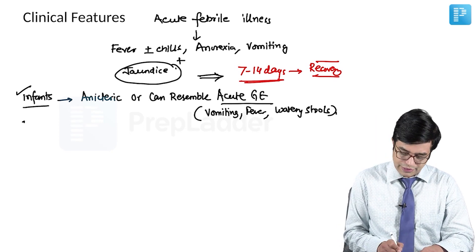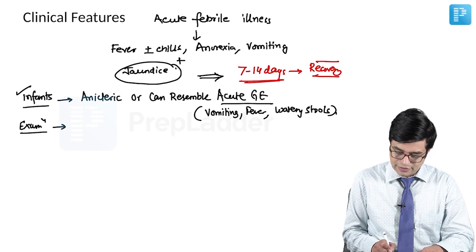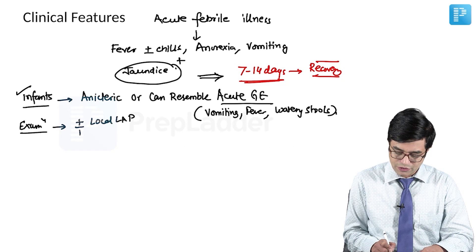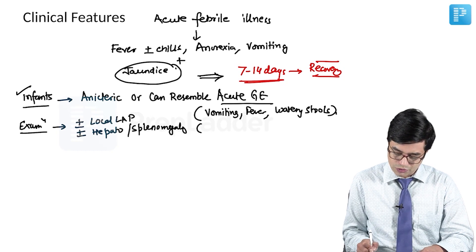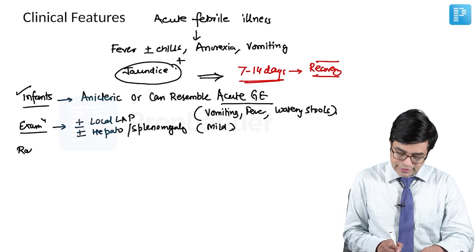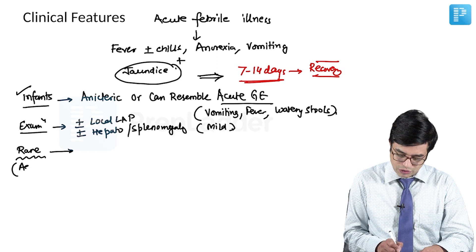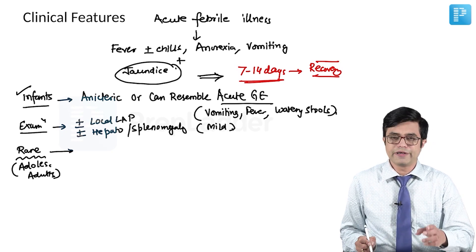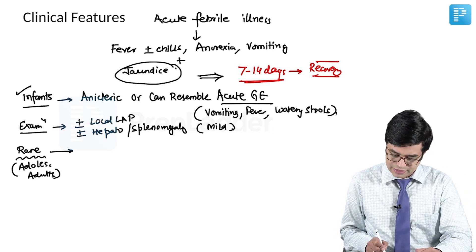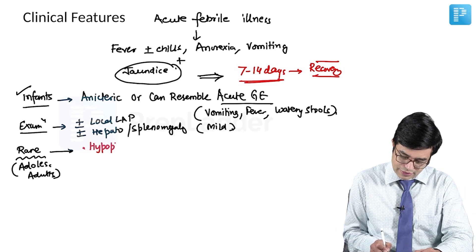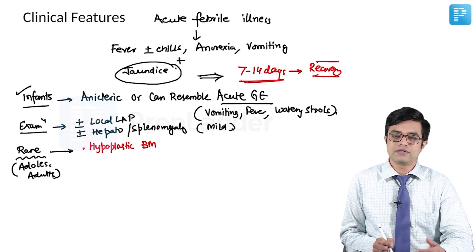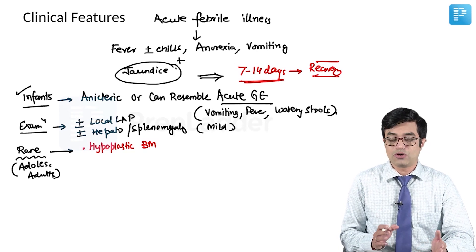On examination, there may or may not be local lymphadenopathy. There may or may not be hepatomegaly or splenomegaly, and if present, they are both usually mild. Very rare patients can have some extra manifestations, which are more common in adolescents and adults. According to Nelson, these include hypoplastic bone marrow — although progression to aplastic anemia is very rare, hypoplastic bone marrow which is self-limited can be seen in some adolescent and adult patients.